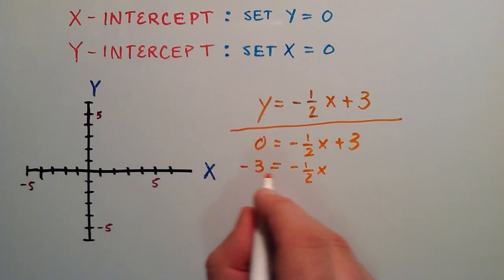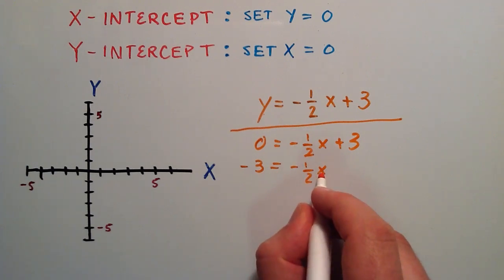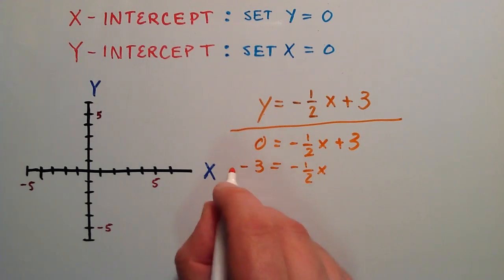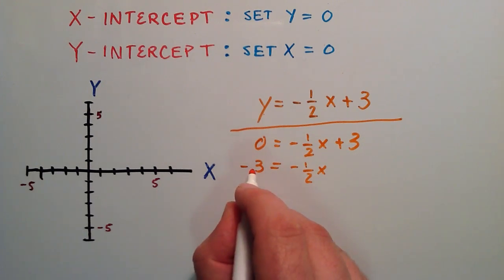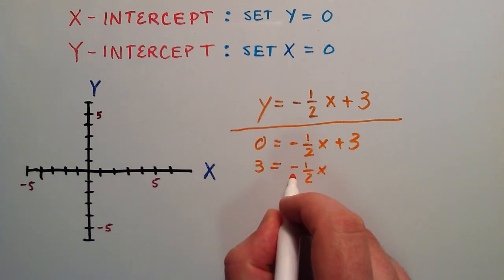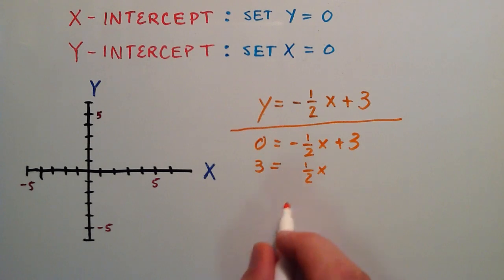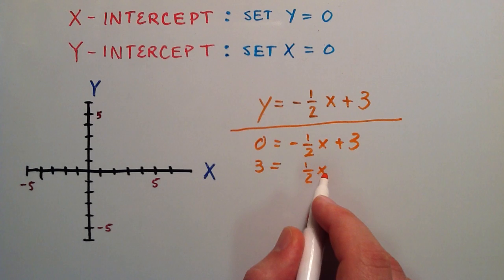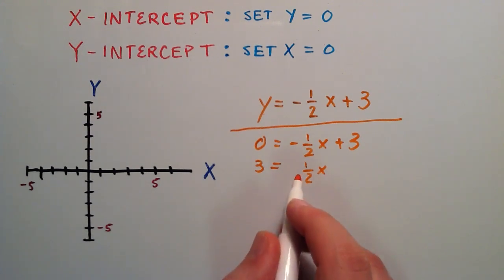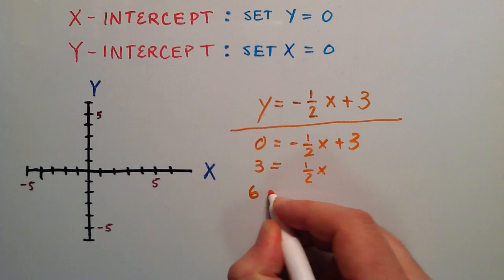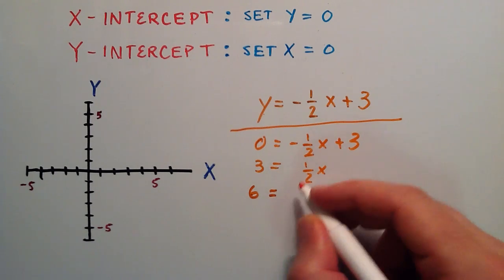So now we have negative 3 equals negative 1 half x. Since we have a negative on both sides, we can multiply each side by negative 1. Negative 1 times negative 3 gives us positive 3, and negative 1 times negative 1 half x gives us positive 1 half x. So now we have 3 equals 1 half x. To get rid of the 1 half, we multiply both sides by 2. 2 times 3 gives us 6, and 2 times 1 half x leaves us with x.